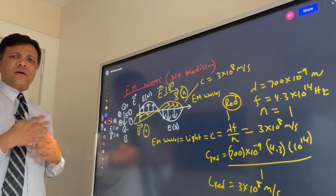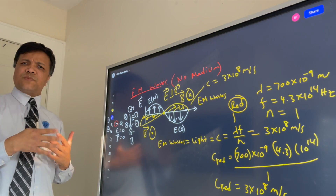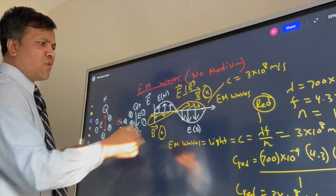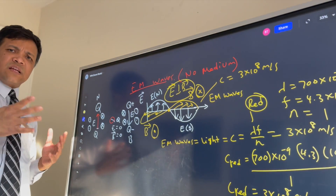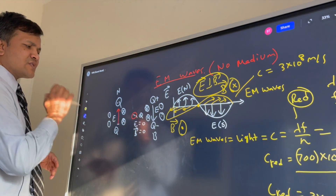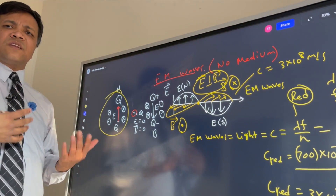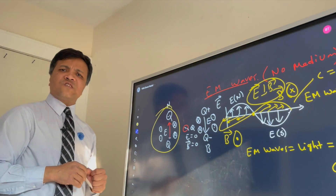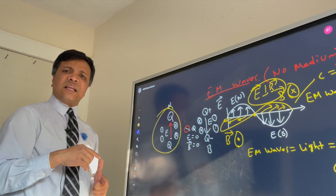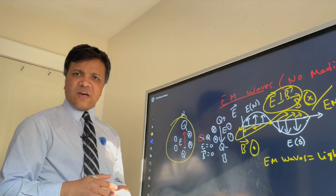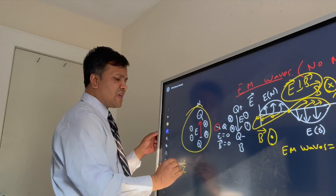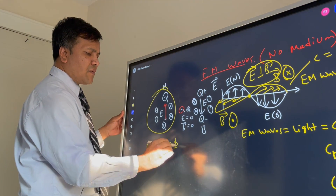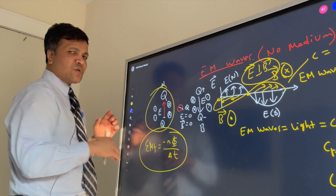The speed of light changes when you change the medium. EM waves are created by the oscillation of electric and magnetic fields — they sustain each other. The electric field creates the magnetic field by Coulomb's law and Ampere's law, and the magnetic field creates the electric field by Faraday's law: EMF = −N × ΔΦ/Δt.